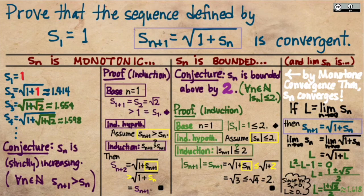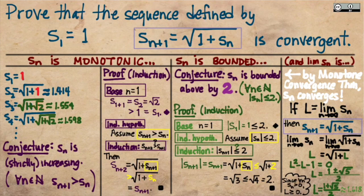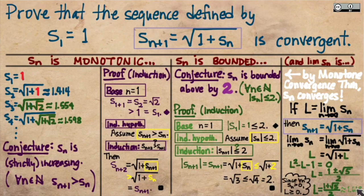This example illustrates the power of the monotone convergence theorem to prove that a sequence converges when its definition is so complex that directly using the epsilon-N definition would be very difficult. Instead, we verified the two criteria of the monotone convergence theorem: that the sequence is monotonic — proved to be strictly increasing using an induction argument — and bounded from above by 2, again established by induction. If all we cared about was convergence, we'd be done at that point. But we can also go one step further and use algebra to determine the actual limit by taking the limit of both sides of the recursion relationship and solving the resulting equation.